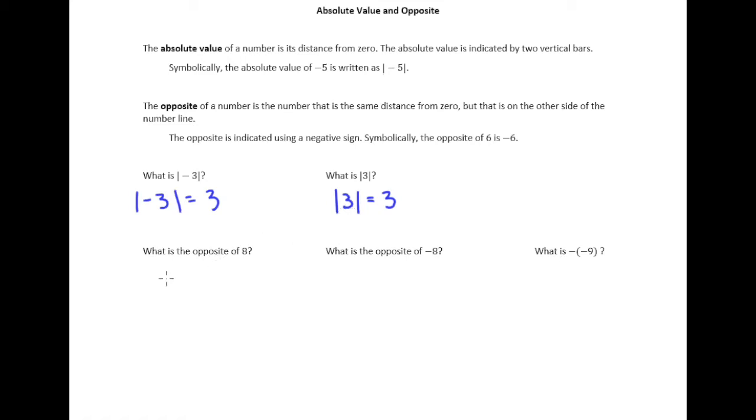Now let's talk about the opposite a little bit. What is the opposite of 8? Well, it's the number that's the same distance from zero on the number line as 8, but it's on the other side. Well, if 8 is over here, which number is the same distance away on the other side? Well, of course, negative 8. So the opposite of 8 is just negative 8.